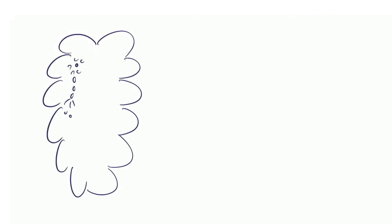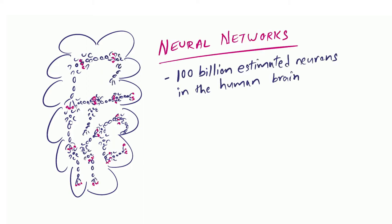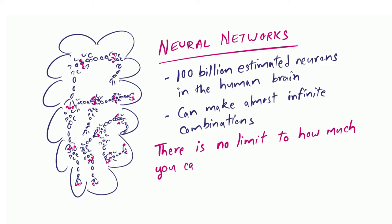It is estimated that in the human mind, there are around 100 billion neurons and they can connect with each other in many ways. Thus, your brain can create an infinite number of neural networks. That is why there is no limit to how much you can learn.